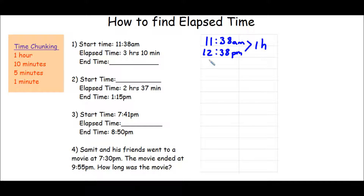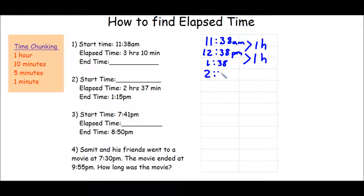Now I need to add two more hours. One more hour after 12:38 would be 1:38 — make a connection, that's one hour. And one more hour would be 2:38 — make that connection, that's one more hour. So I'm done adding the three hours.